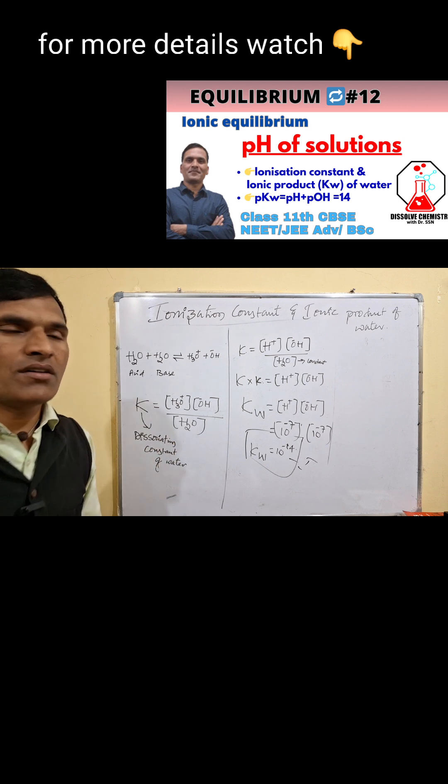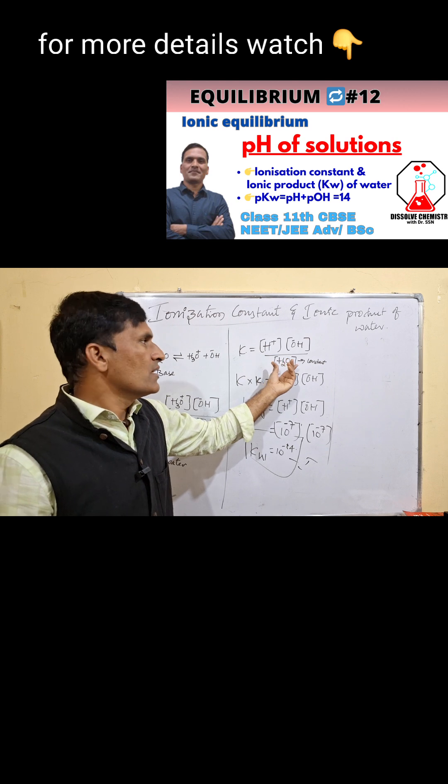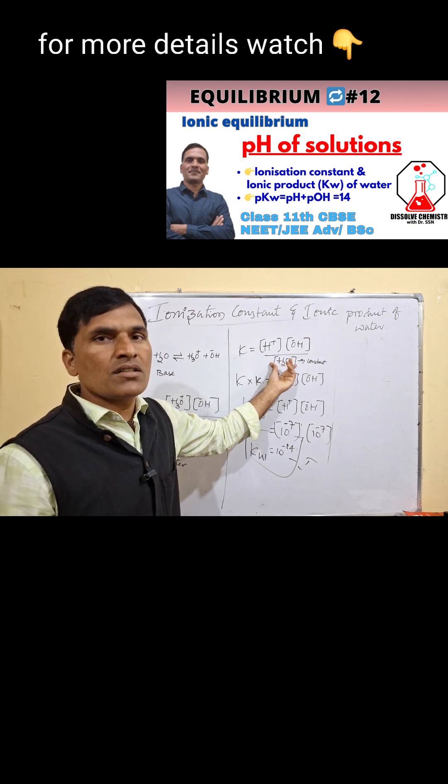K, we call this the dissociation constant of water. In this equation, you see in the denominator pure water, its concentration is taken as constant.